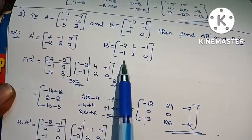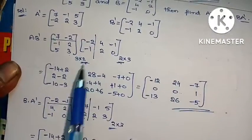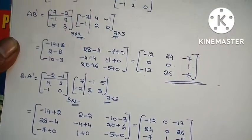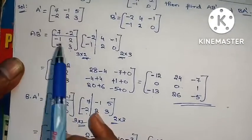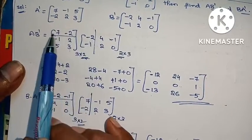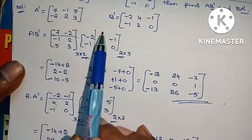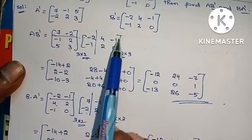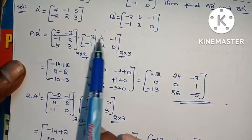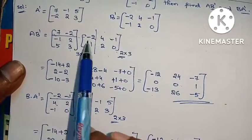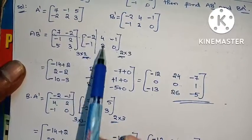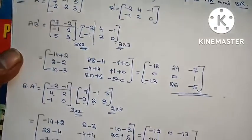The problem is very simple. We found A transpose and B transpose, then computed A×B transpose and B×A transpose carefully: first row first column, first row second column, first row third column, second row first column, second row second column, third row first column, third row second column, third row third column. That is the process, problem complete.